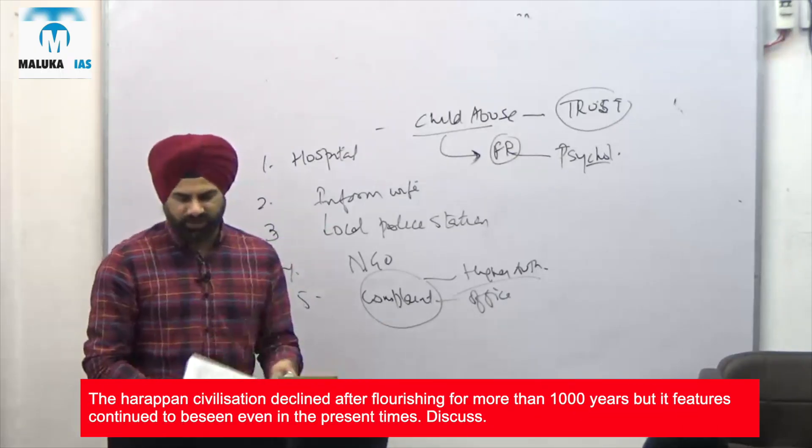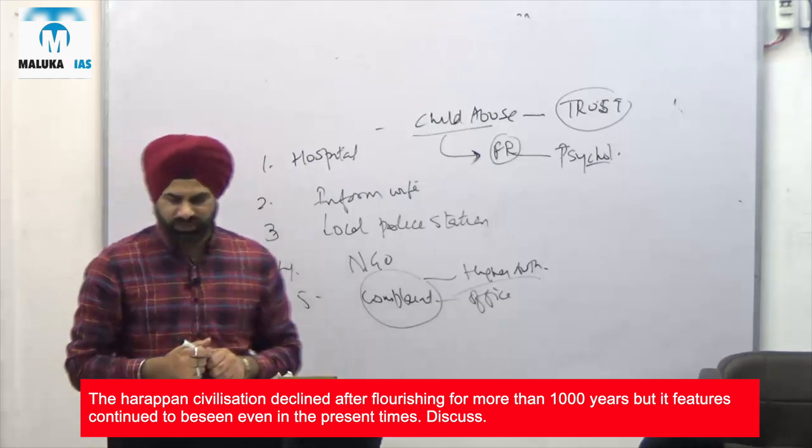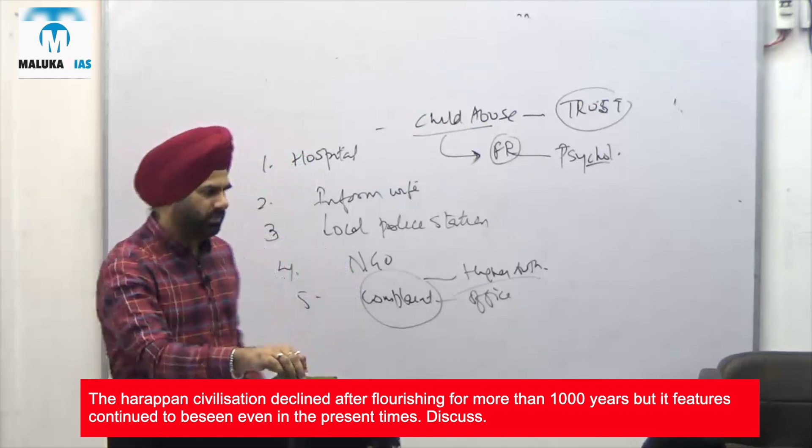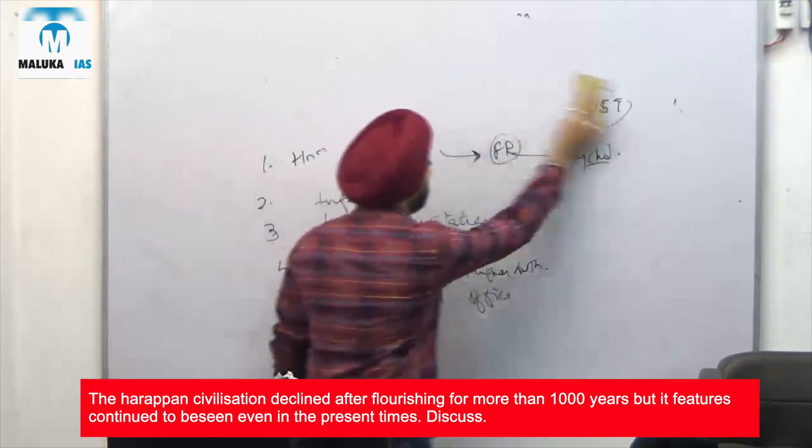The Harappan civilization declined after flourishing for 1,000 years. What features continue to be seen even in the present day times? What features do you see in the present day times?